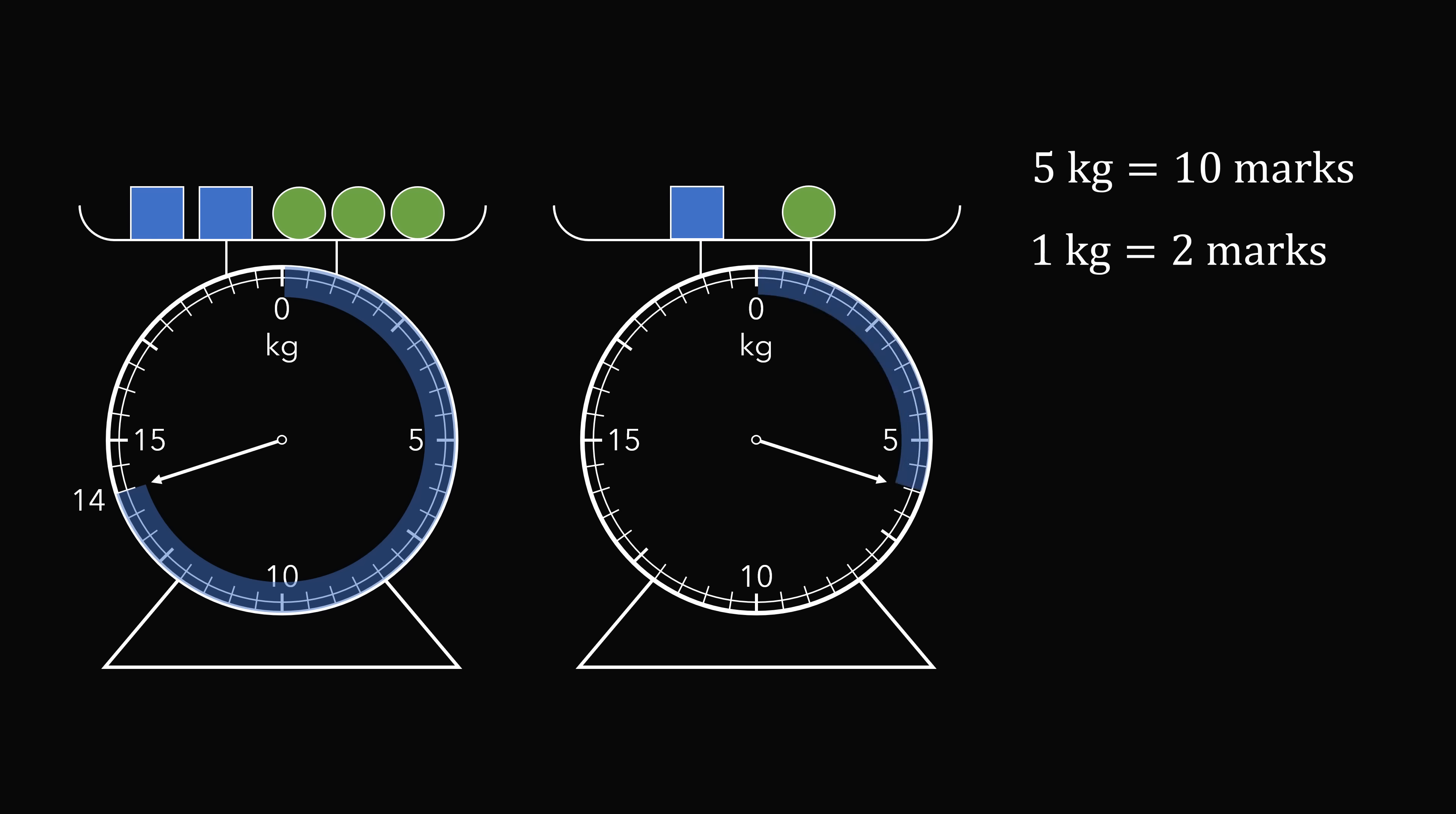Now let's figure out the value for the arrow on the right scale. The arrow is pointing 2 marks ahead of the 5 kilogram mark level. So this will be 1 kilogram more than 5 kilograms, which equals 6 kilograms.